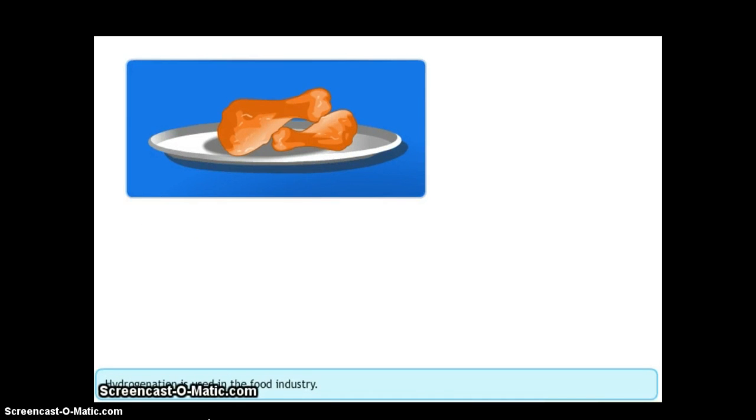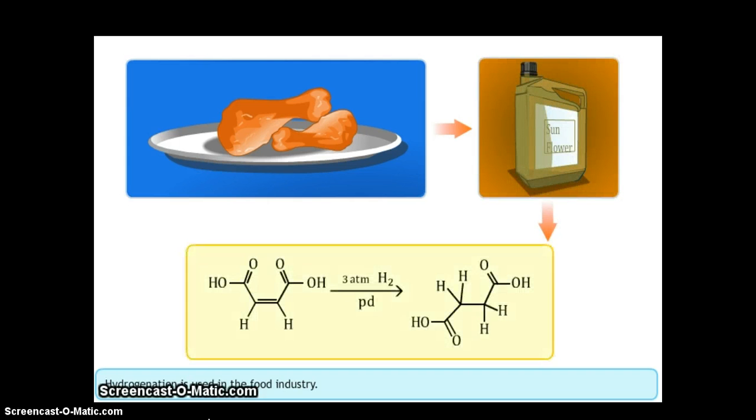A common application of hydrogenation is in the food industry. Vegetable oils that are unsaturated hydrocarbons are converted to saturated oils by the process of hydrogenation.